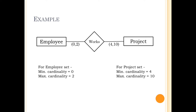Let's take an example. We have two entity sets: Employee and Project. The two sets are related through the relationship set named Works. Some rules have been set: a project must have a minimum of 4 employees, and a maximum of 10 employees can work in one project. So the Minimum and Maximum Cardinality of the project set are 4 and 10 respectively. On the employee side, an employee may not work in any project, and one employee can work in a maximum of two projects. So the Minimum and Maximum Cardinality for the employee set are 0 and 2 respectively. The representation of this example in an ER Diagram is shown on the screen.